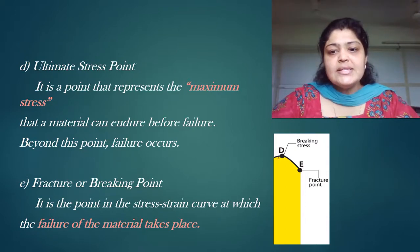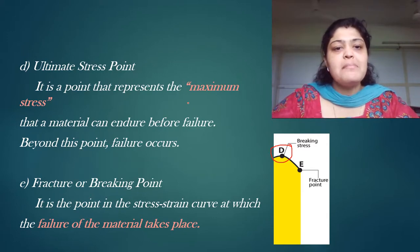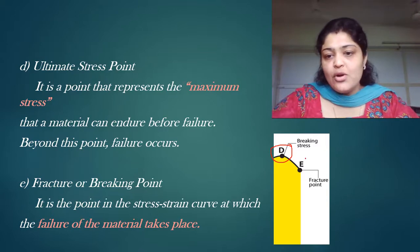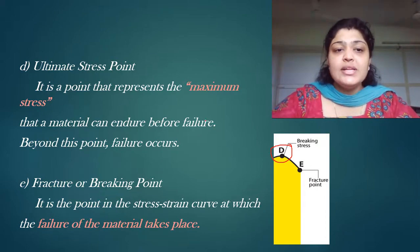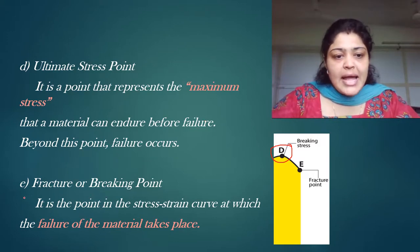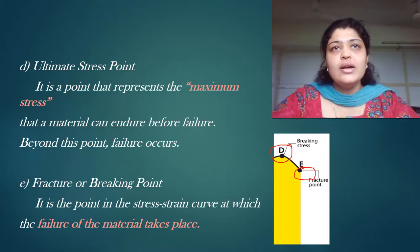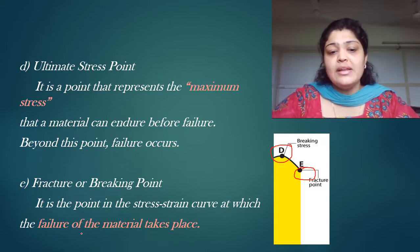The ultimate stress point, also known as the breaking stress, is point D. It represents the maximum stress that a material can endure before failure. Beyond this point, even if stress decreases, the material fractures. This is the maximum stress a material can withstand, and it is part of the plastic limit. The fracture or breaking point E is where the material will no longer hold its shape — complete failure takes place and the material is damaged.